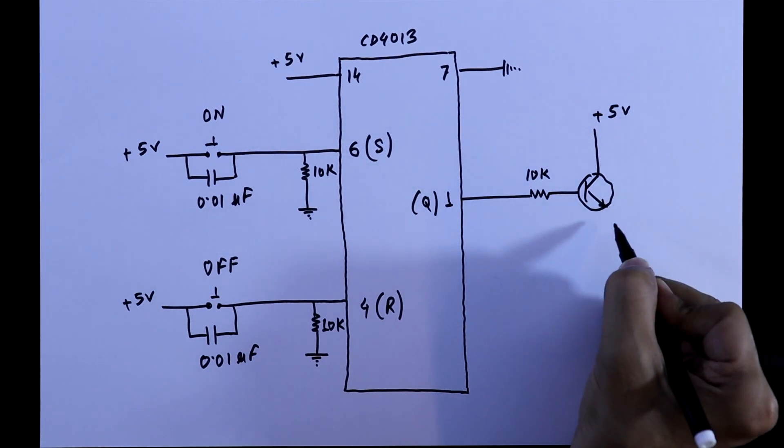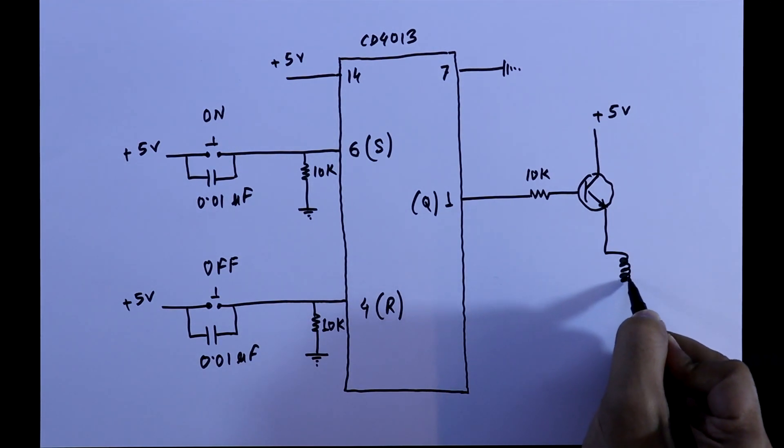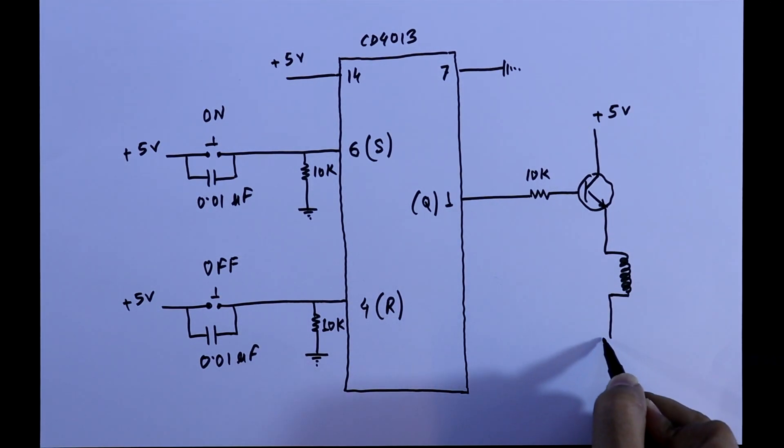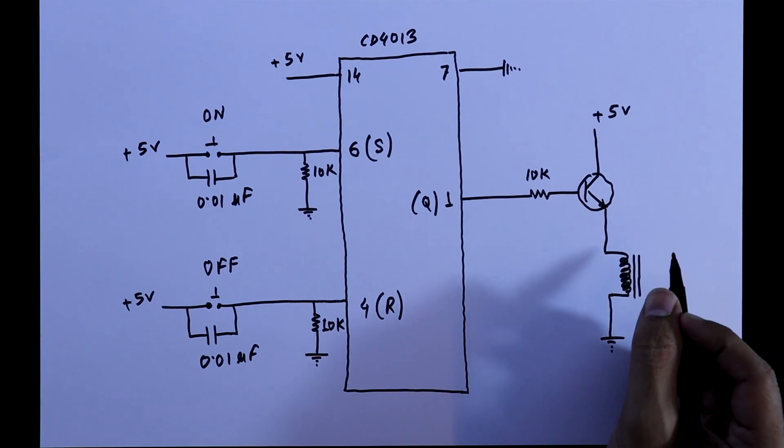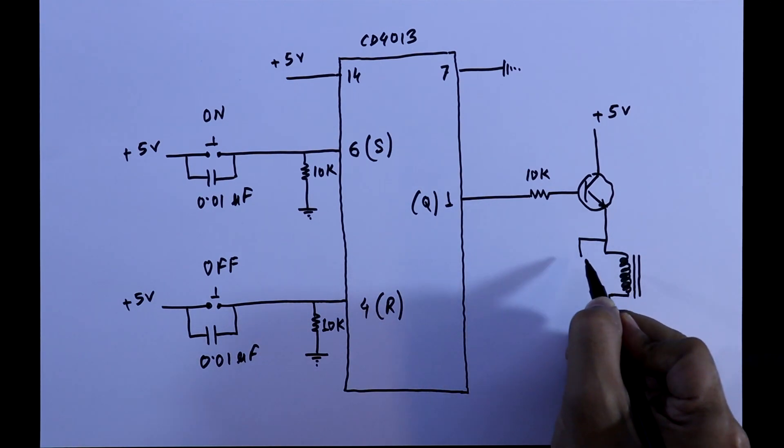The collector is connected to plus 5V, and with the emitter we have to connect the relay. The other pin of the relay is connected to ground, and parallel to this coil we have to connect a diode in reverse bias.